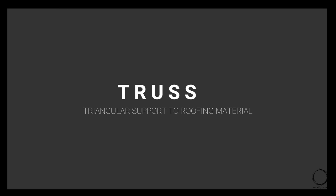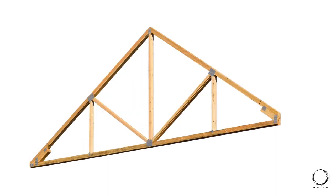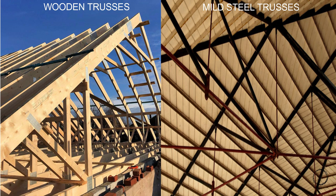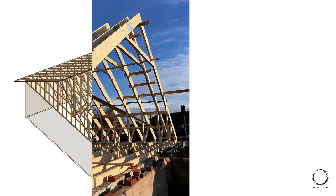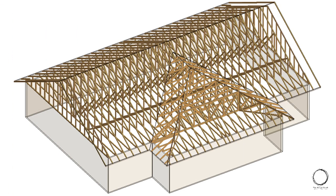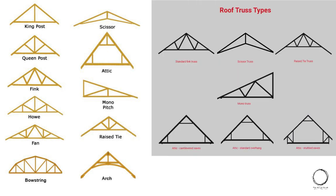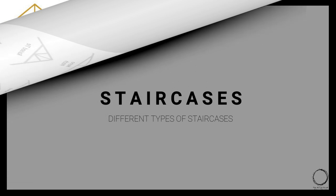The next term is truss — a triangular support to roofing material. A truss is a triangular-shaped structure that supports the purlin and the roof above it. Trusses can be made with wood or mild steel. Truss is placed at regular intervals, and there are different types including king post truss, queen post truss, and arch brace truss, and it can be designed in any form according to the structure and load it carries.